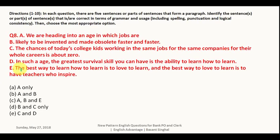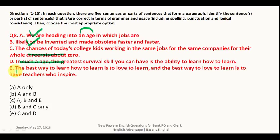Question number eight — the last question. Part A — 'we are heading into an age in which jobs are likely to be invented and made obsolete faster and faster' — 'heading into' is the correct phrase and 'an age' preceded by 'an' is also correct, so this is correct. Part B — same sentence is also correct. Part C — 'the chances of today's college kids working in the same job for the same companies for their whole career' — it should be 'are' relating to 'chances,' so this is incorrect. Part D — 'in such an age' — is correct. Part E — 'the best way to love to learn is to have teachers who inspired' — this is also correct. A, B, and E are the correct options, so your answer is C.